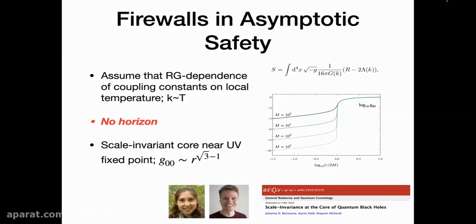We identified that RG scale with the local temperature in a geometry, in a spherical geometry, or a Tolman temperature to be more precise. We extremize this action with this assumption that G and lambda are not constants anymore, but have an RG dependence on local temperature based on asymptotic safety. What we found, in fact, solutions have no horizon. You have a very deep core, but not infinitely deep core. This is one possibility for quantum gravity theory of quantum gravity.